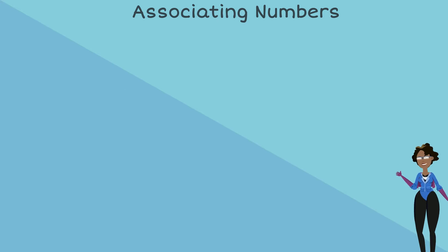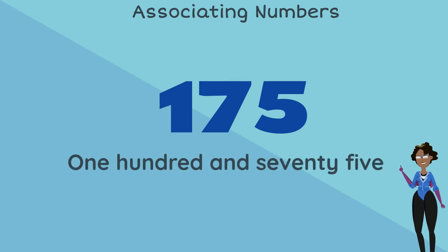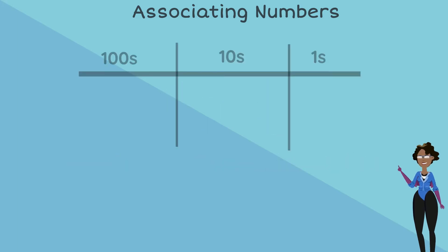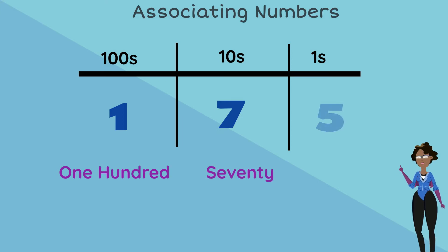Now we're going to look at some bigger numbers and see how we can figure out their word names. Let's use this number. This number in words is 175. 1 is in the 100s place, that's why it's 100. 7 is in the 10s place, which is 7 by 10, that's why it's 70. And 5 is in the 1s place, that's why it's just 5.